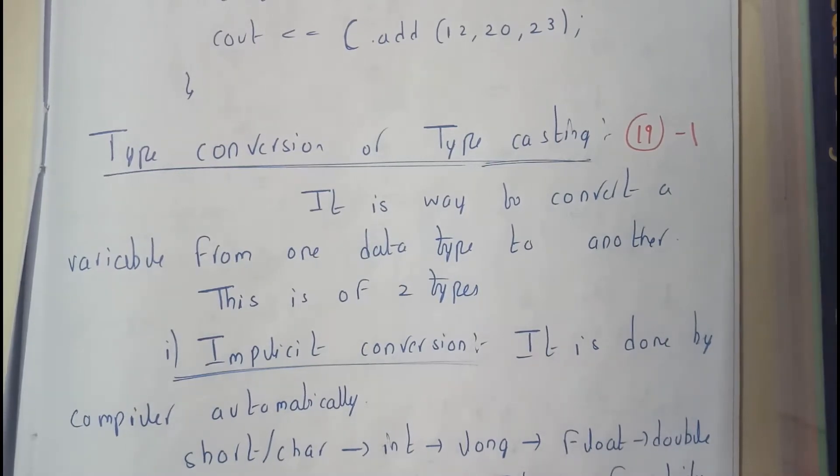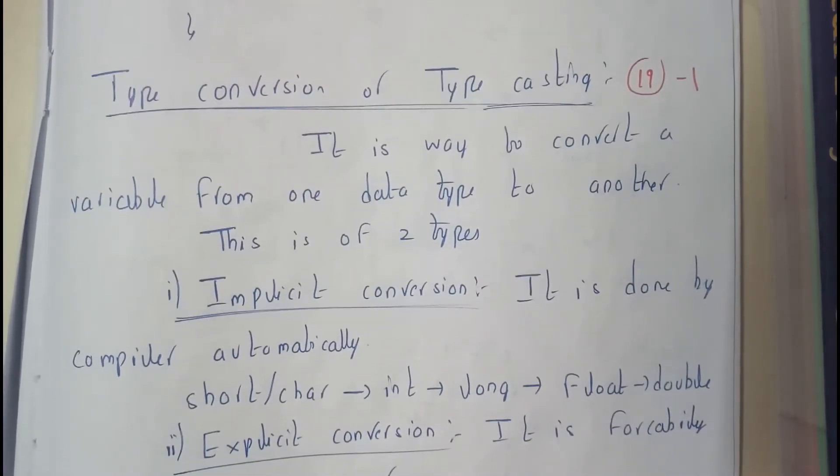It is a way to convert a variable from one data type to another type. So there are two methods in this.